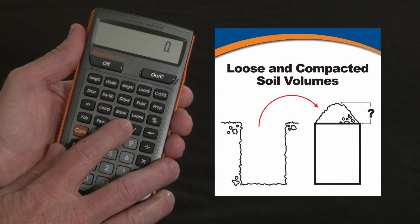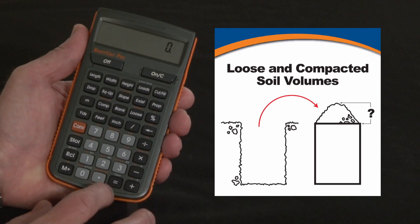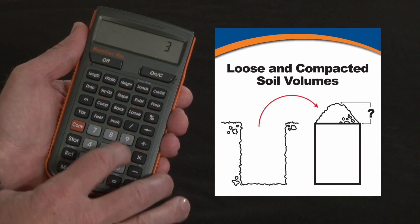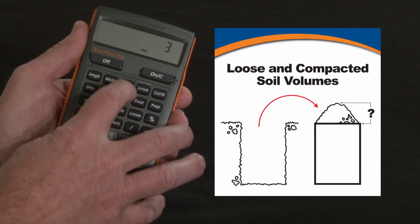Now let me show you how to use your calculator's loose and compacted soil volume functions. Say you've got a trench that's 245 feet long, 3 feet wide, and maybe 3 feet deep.